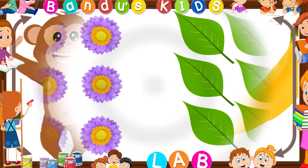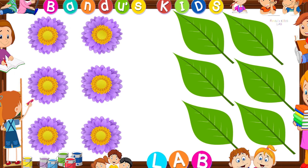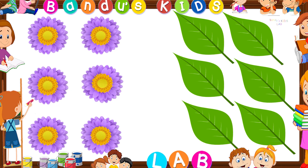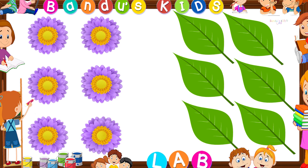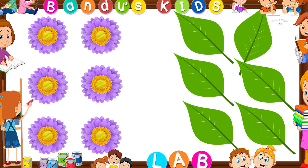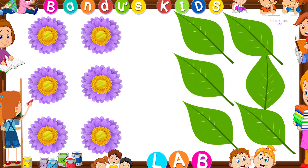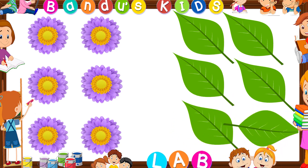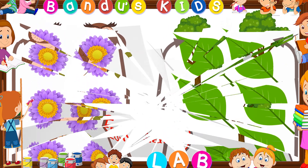Look at this picture. Let's count: one, two, three, four, five, six — here are six flowers. Now let's count the leaves: one, two, three, four, five, six — here are six leaves. The set of flowers and the set of leaves are equal in number, so they are equal.